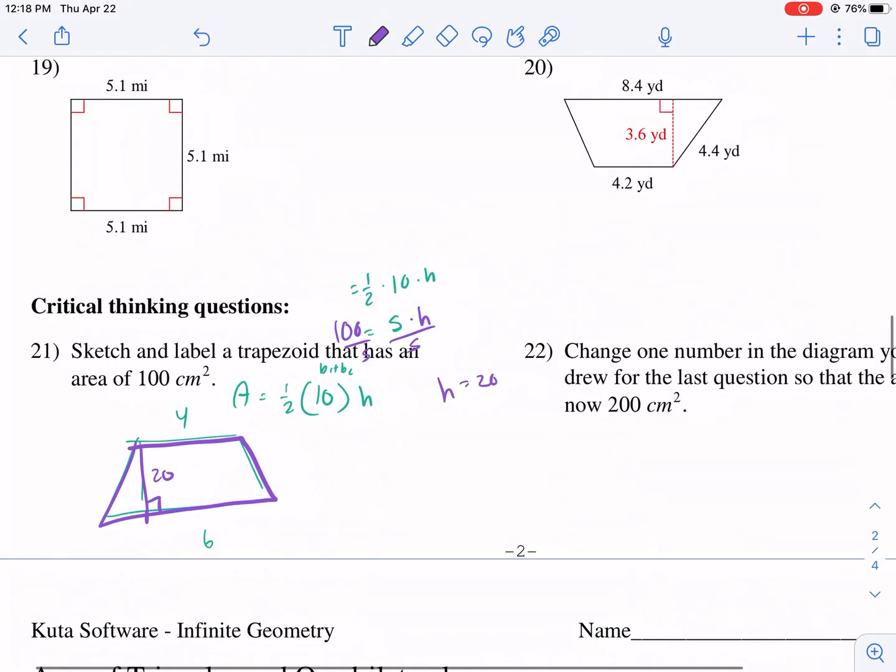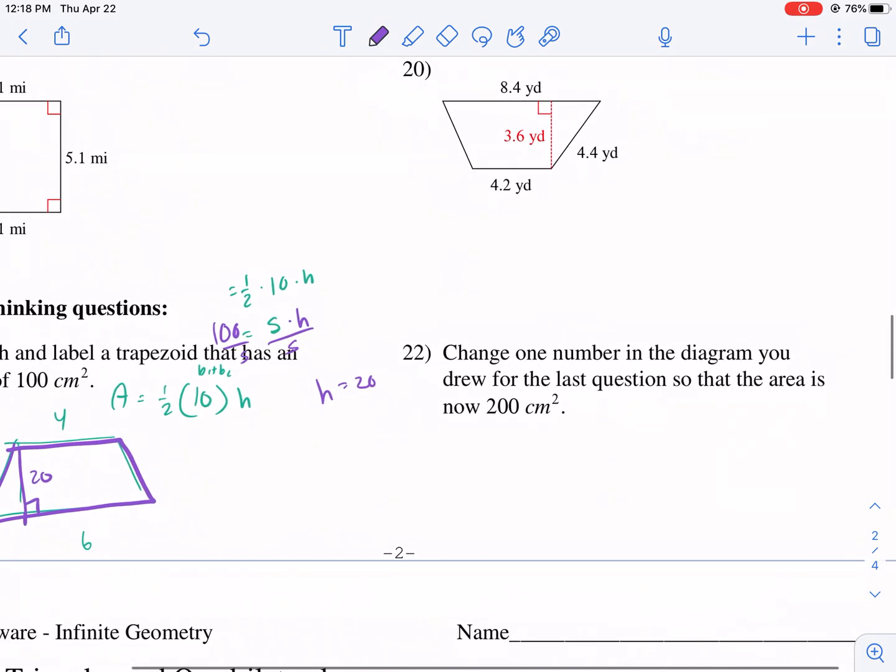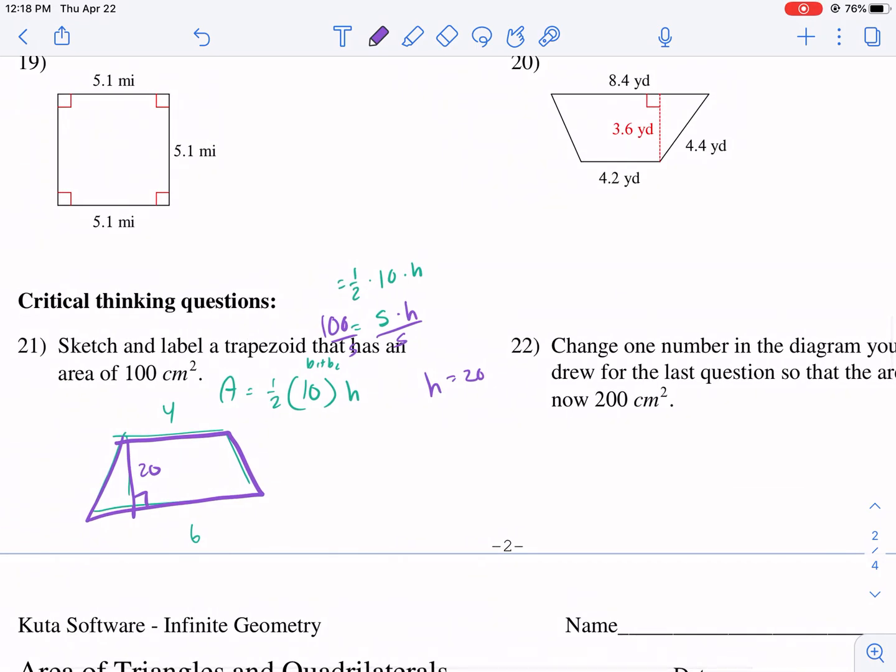Change one number in the diagram you drew for the last question. So the area is now 200. The easiest thing to do here would be to change my height. So instead of a height of 20, let me make it a height of, and this is not to scale, clearly. I would just make it a height of 40. And then that would double my area to get it to be 100.